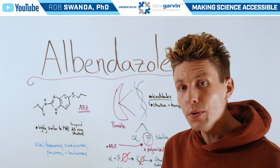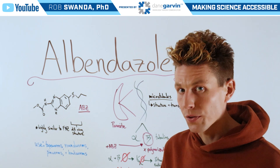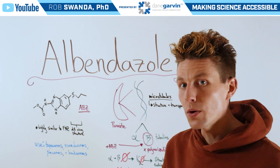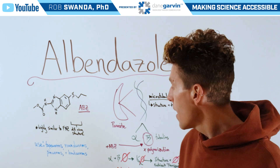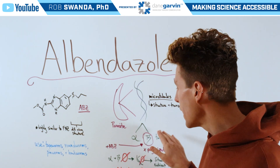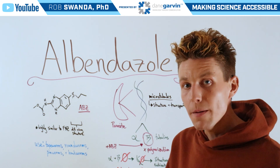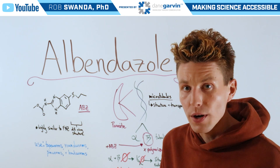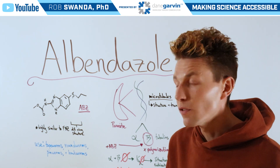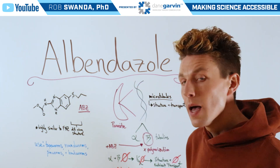But if we break down those microtubules even further, they're composed of two other components: alpha and beta tubulin. And those alpha and beta tubulins need to come together, or polymerize, in order to form the microtubules.